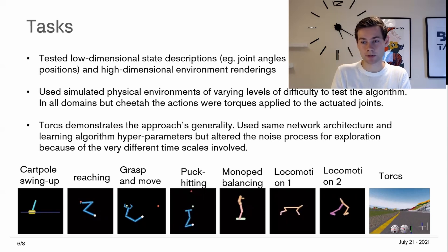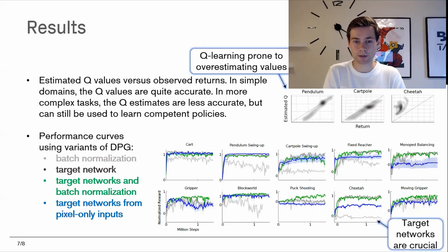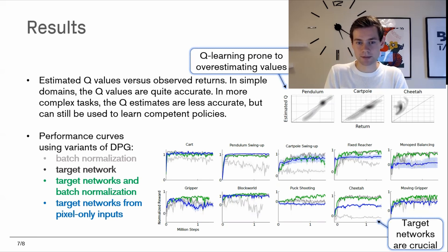Looking at the results, we see a comparison between estimated Q values versus observed returns. In simple domains like the pendulum and cart-pole, the Q values are quite accurate toward the expected reward. However, in more complex tasks the Q value estimates are less accurate, but they can still be used to learn competent policies. Q-learning in general is quite prone to overestimating state-action values.